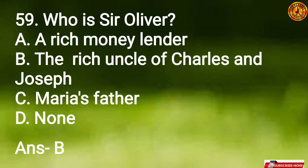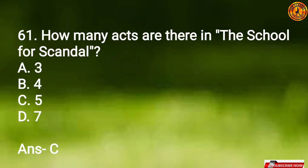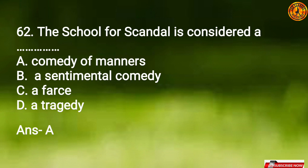Question 59: Who is Sir Oliver? Option B, the rich uncle of Charles and Joseph. Question 60: The play 'The School for Scandal' was written in which year? Option A, 1777. Question 61: How many acts are there in 'The School for Scandal'? Option C, 5. Question 62: 'The School for Scandal' is considered Option A, a Comedy of Manners.